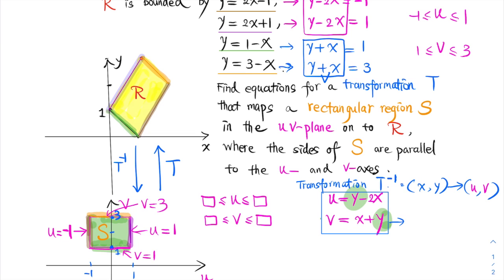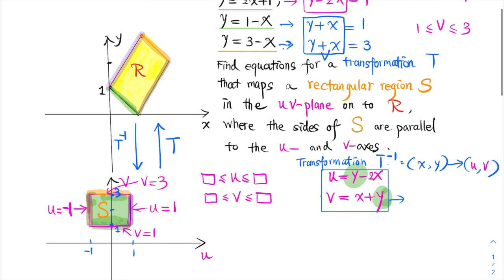because we're trying to map S here to region R. So if this is the transformation T, this is T inverse.